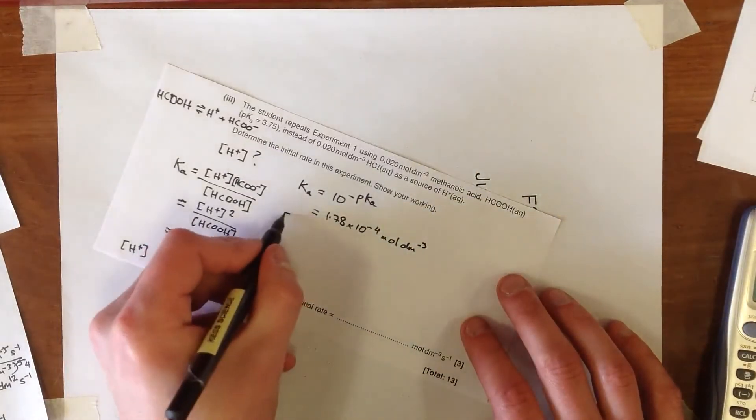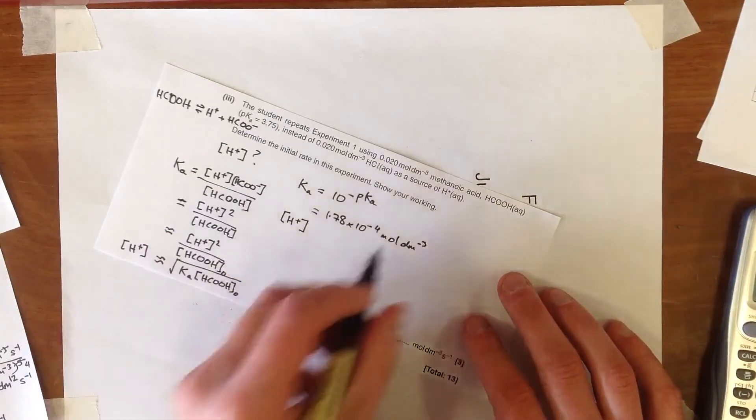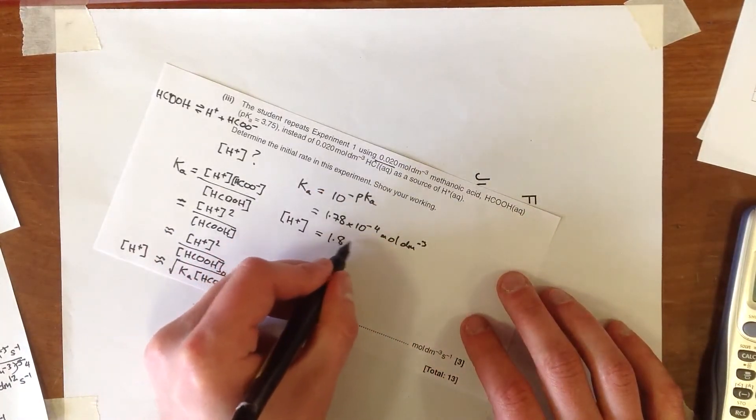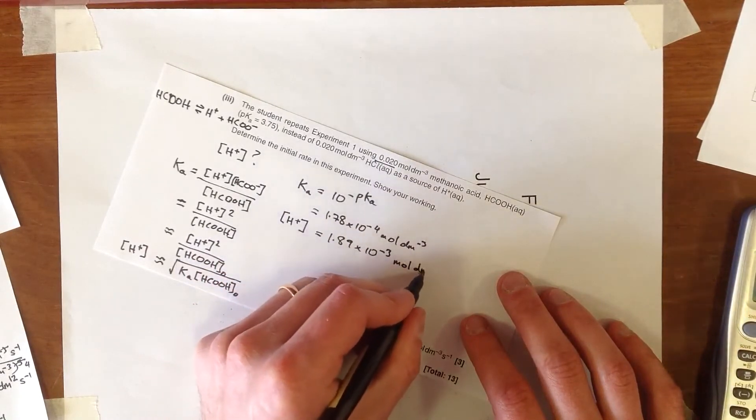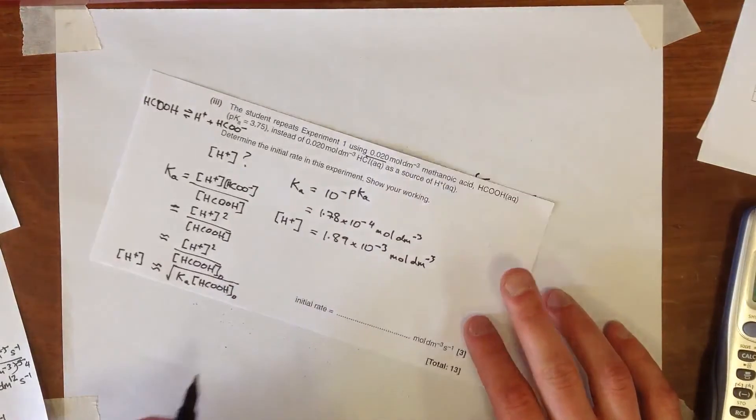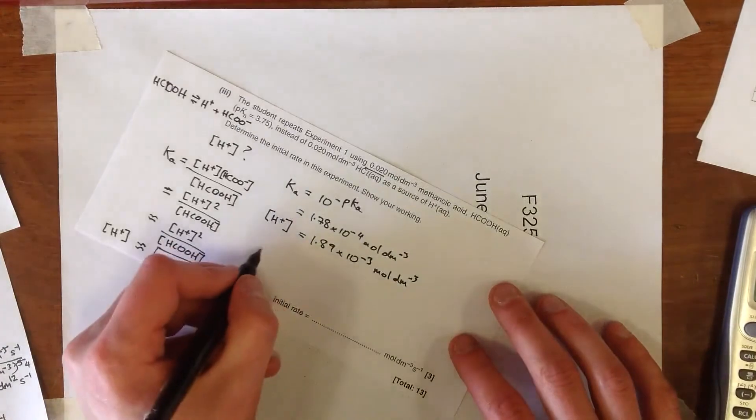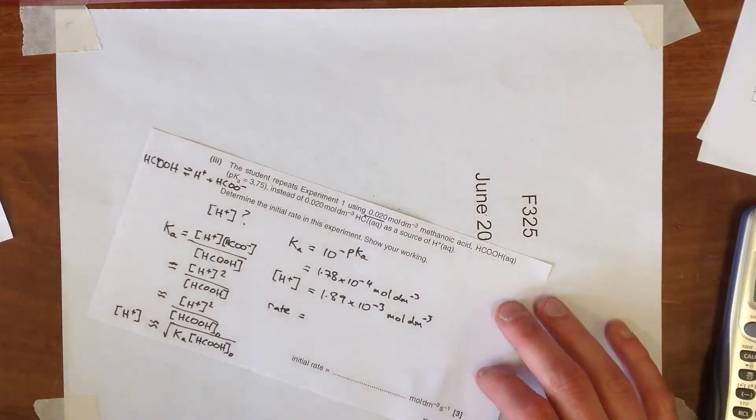And then that gives us an H plus concentration when we plug the numbers in with the concentration here of 0.02 of 1.89 times 10 to the minus 3 moles per decimetre cubed. And, of course, we're keeping these numbers on our calculator as a three significant figure value, so that we can use them in subsequent calculations. And now, to work out the initial rate, we just need to look at the rate equation.